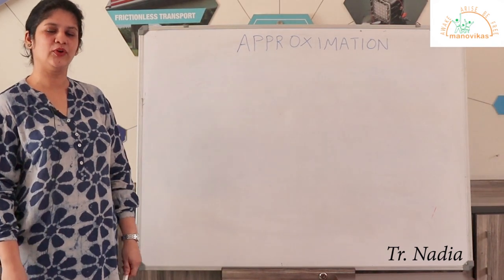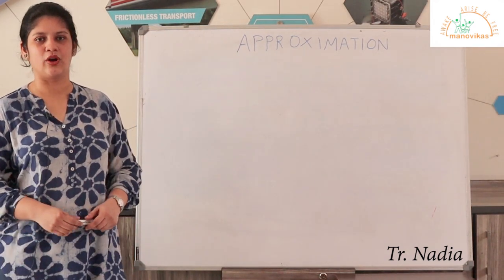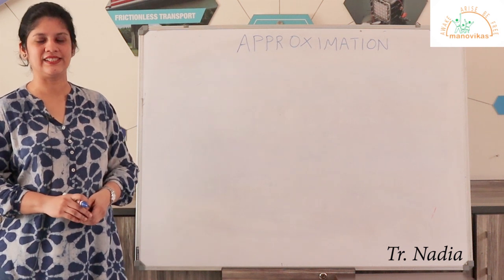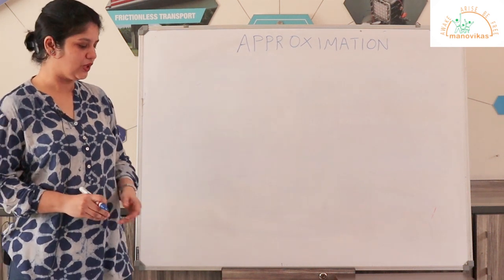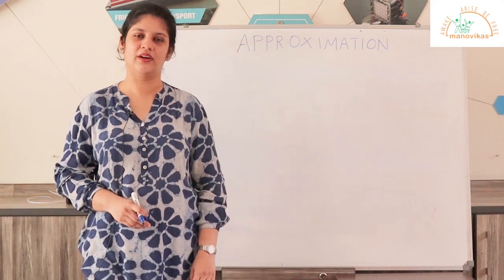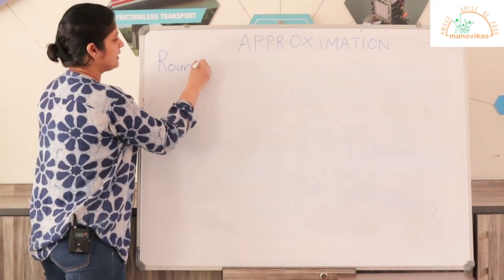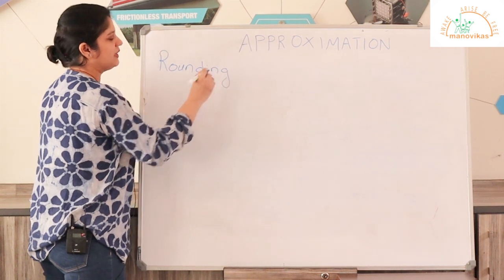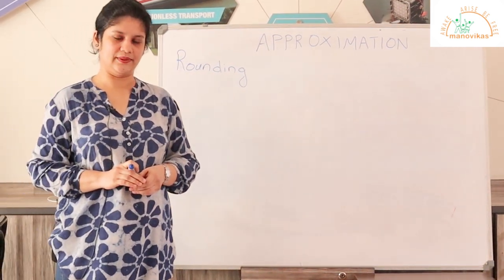Hello students, today I'm going to begin with the sixth standard maths topic: approximation, on page 23 of your maths textbook. When we go to approximation, we have to first learn how to round up a number. Rounding up a number means making the number simpler but yet keeping its value close to the original.